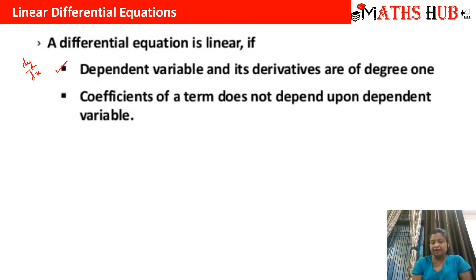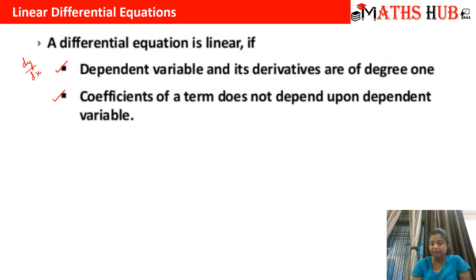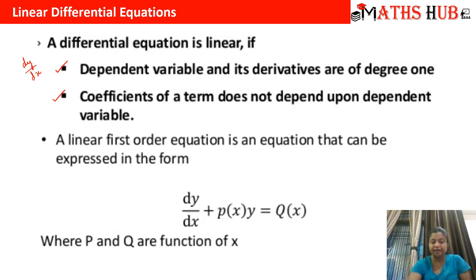y and its derivative should have degree 1 and they should not be in the form of a product. Secondly, any coefficient of a term should not depend upon the dependent variable — that means it should be free from y. It can contain any terms of the independent variable, but none of the terms should involve the dependent variable.